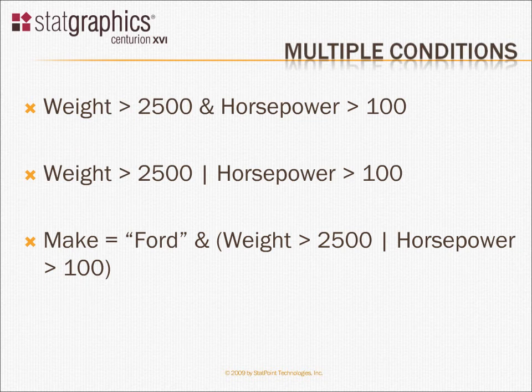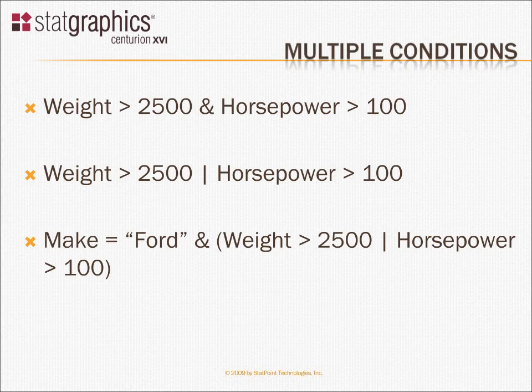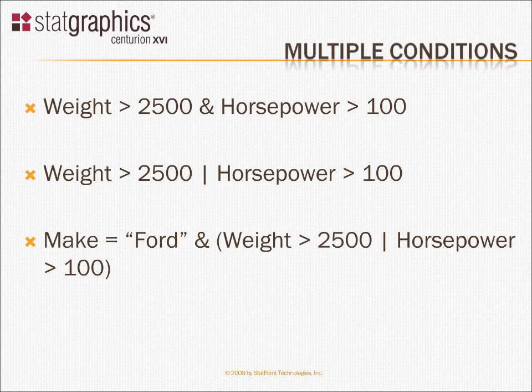You can also combine more than one condition together using AND and OR operators. The expression at the top asks the program to select observations for which weight is greater than 2,500 and horsepower is greater than 100. To be selected, a row would have to meet both of those conditions. If you type "weight greater than 2,500 or horsepower greater than 100" using a vertical bar for OR, then a row would be selected if it met either one or the other, or both of the conditions.